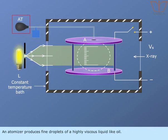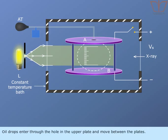An atomizer produces fine droplets of a highly viscous liquid like oil. Oil drops enter through the hole in the upper plate and move between the plates.